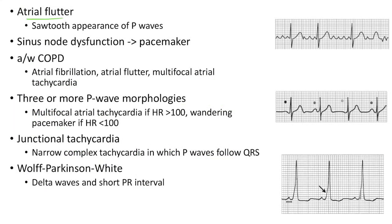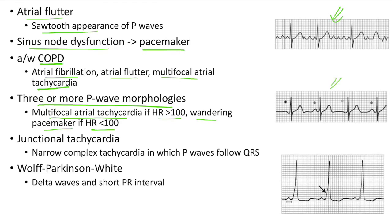Atrial flutter: ECG shows sawtooth appearance of P waves. Whenever there is sinus node dysfunction, treat with pacemaker. Arrhythmias associated with COPD include atrial fibrillation, atrial flutter and multifocal atrial tachycardia. When there are three or more P wave morphologies, suspect multifocal atrial tachycardia if heart rate >100, or wandering pacemaker if <100 bpm. Junctional tachycardia: narrow complex tachycardia in which P waves follow QRS complexes. Wolff-Parkinson-White syndrome: delta waves and short PR interval.